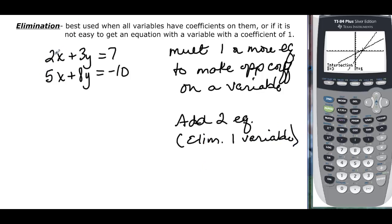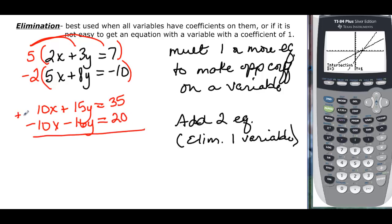If I wanted to get rid of x here, I could multiply this top equation by 5, and that would give me 10. If I did that, I want opposite coefficients, so I'd have to multiply the bottom equation by negative 2. That gives me 10x plus 15y equals 35, and negative 2 times 5 would be negative 10x, negative 2 times 8 would be minus 16y, and negative 2 times negative 10 would be positive 20. Then you would add them, so these would cancel out.